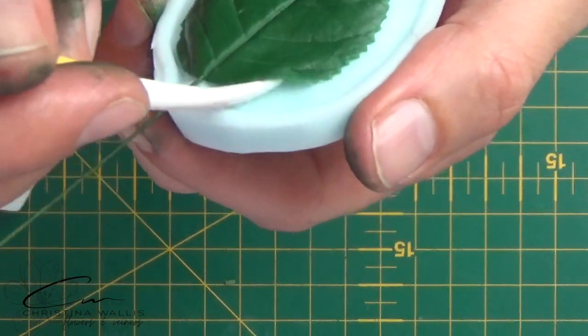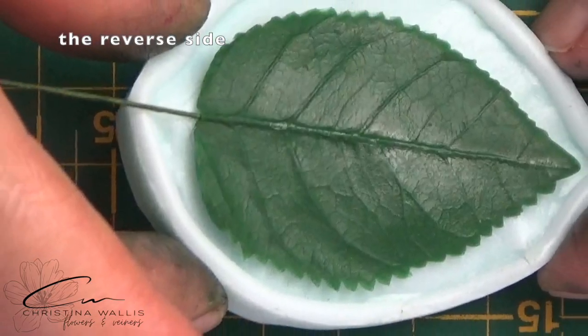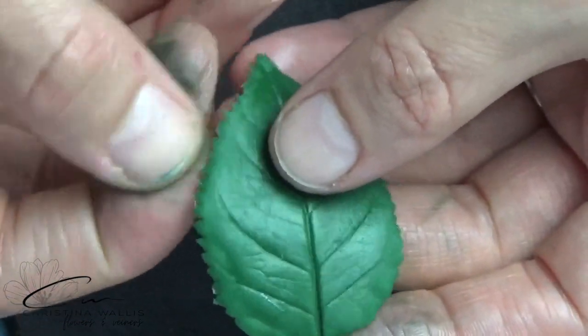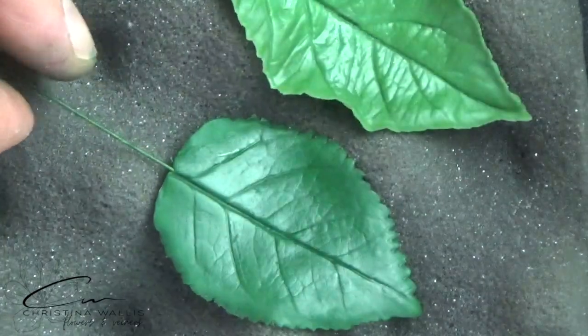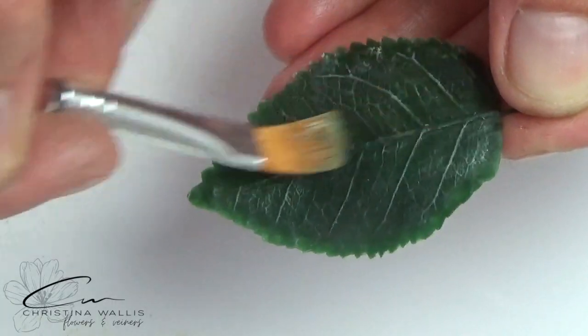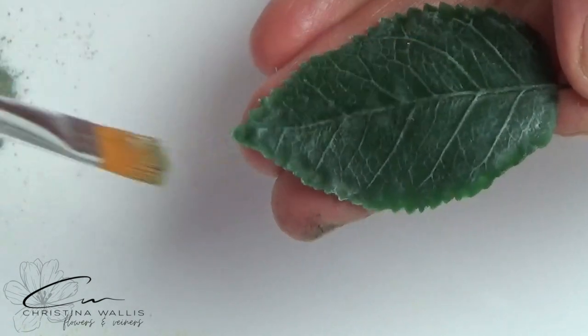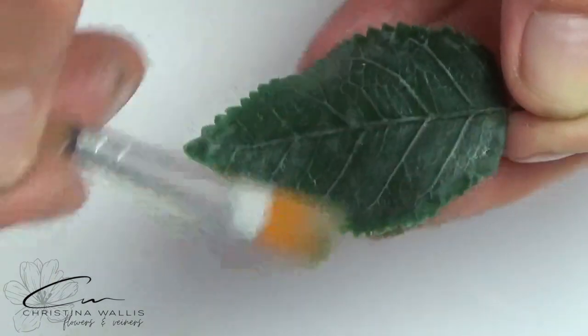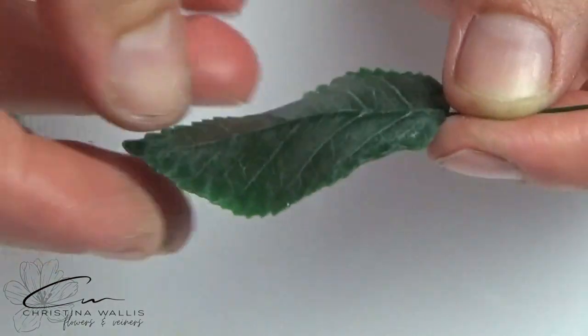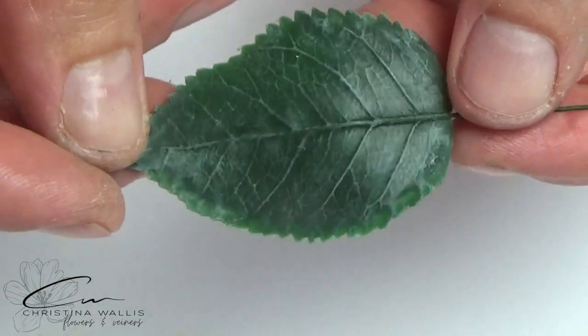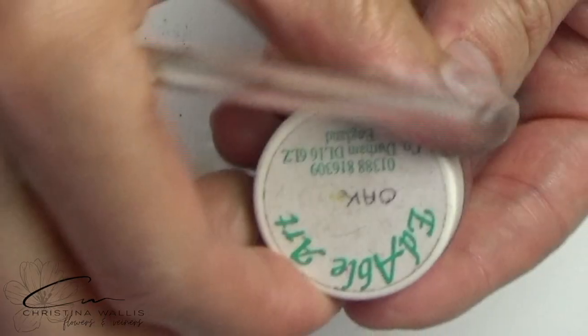I do curve this edge out, whereas for apple I was using a ball tool to curve it in. And once your clay is totally dry, you do this. So this shows you the texture in the back very nicely.